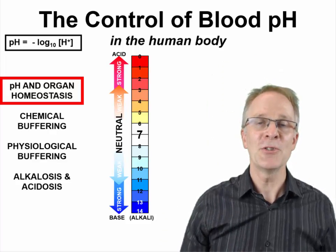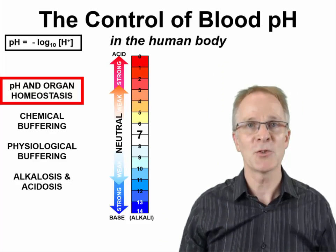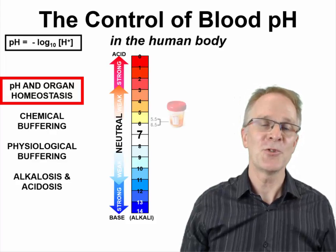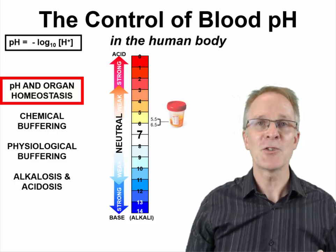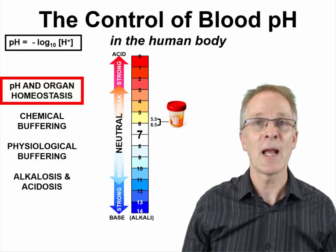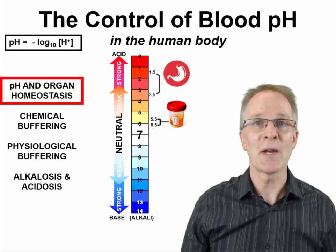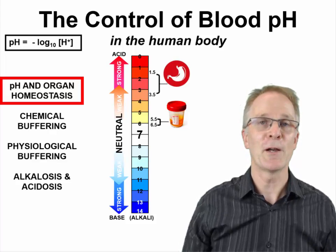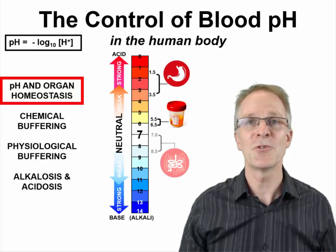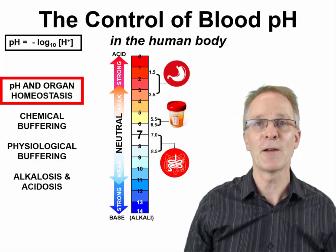For optimal health, tissues and organ systems need to maintain pH within a particular range. For example, our kidneys produce urine in the range of pH 5.5 to 6.5. Our stomach produces digestive juices in the range of pH 1.5 to 3.5. And our small intestine neutralizes those juices by having a pH of 7 to 8.5.